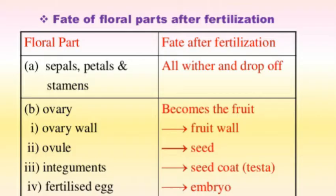This seed detaches from the plant. You can see here how the parts of the flower make different parts, like fruit wall and seed. The ovary forms the fruit, the ovary wall forms the fruit wall, the ovule forms the seed, the integument forms the seed coat, and the fertilized egg forms the embryo.